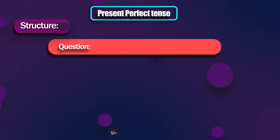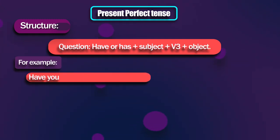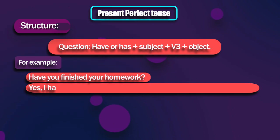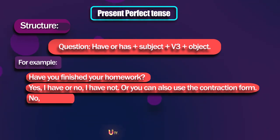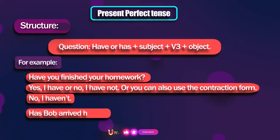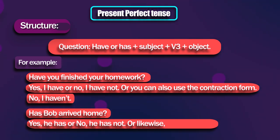For the question form, we put the helping verb 'have' or 'has' before the subject, plus third form of verb, plus object. For example: Have you finished your homework? To answer, you could say yes, I have, or no, I haven't — which is a yes/no question. Has Bob arrived home? Yes, he has, or no, he hasn't.